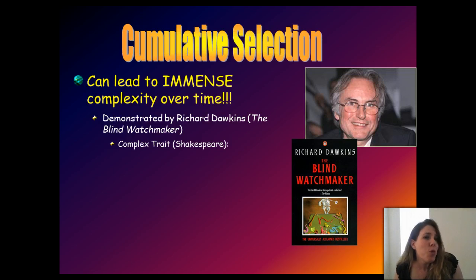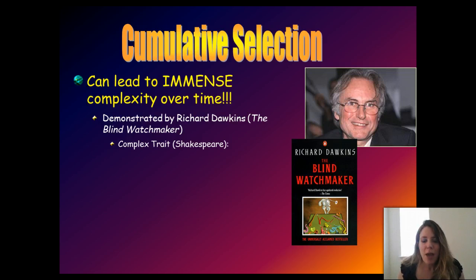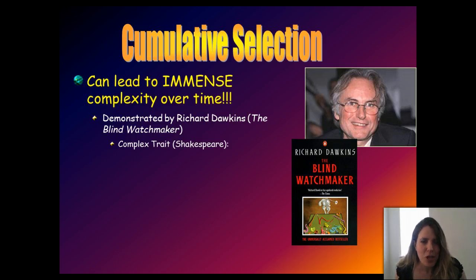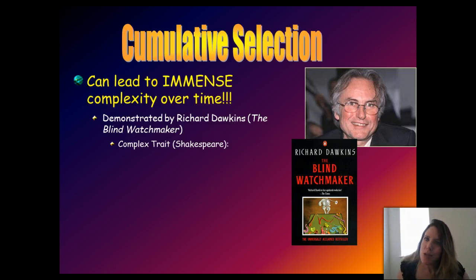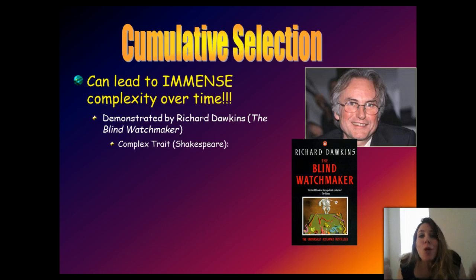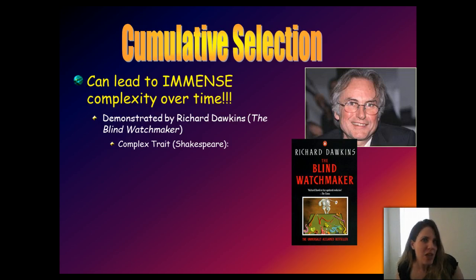The part of evolution that would be random is mutations — you can have random mutations in the DNA or chromosomes popping up. For now, just know we can consider mutation random and natural selection the opposite of randomness. Dawkins wanted to give an illustration of how natural selection, through its selective process, can lead to great complexity over time.